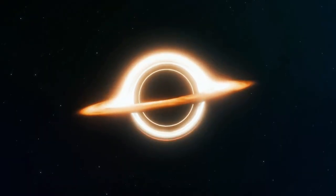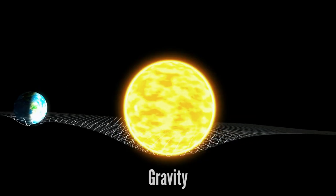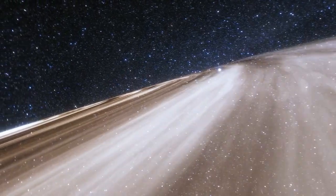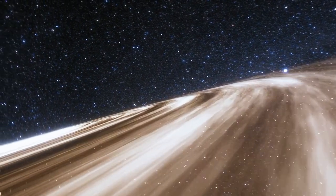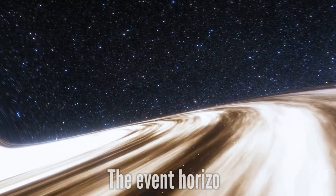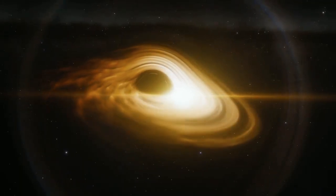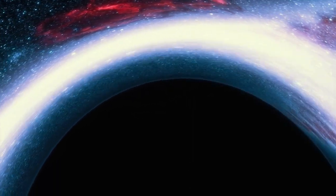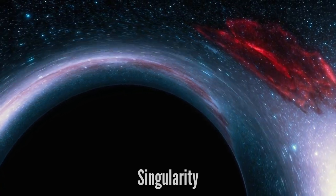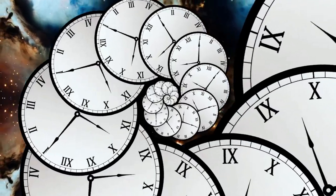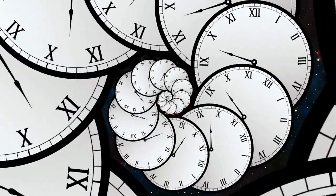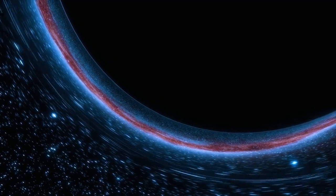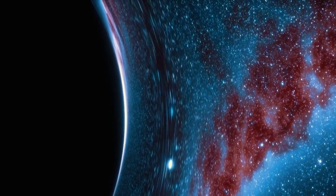But what exactly are black holes? To understand them, we must first comprehend the idea of gravity. Gravity causes masses to attract one another. When a huge star runs out of fuel and collapses under its own weight, it creates an area with such powerful gravitational pull that nothing, not even light, can escape. This is referred to as the event horizon, or the point of no return.